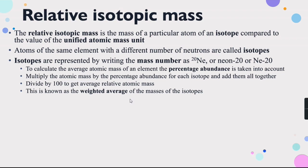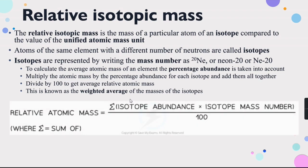The formula for relative atomic mass is: Ar = Σ(isotope abundance × isotope mass number) / 100, where sigma (Σ) represents the sum. This gives the weighted average of the masses of the isotopes. That covers relative isotopic mass.